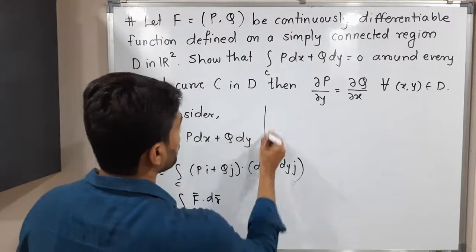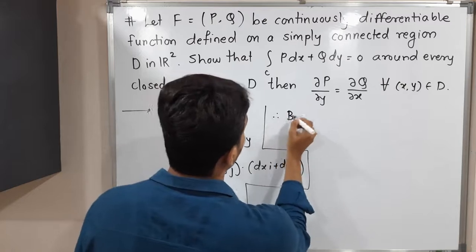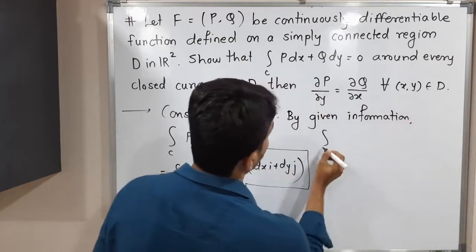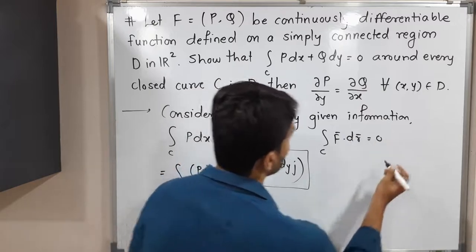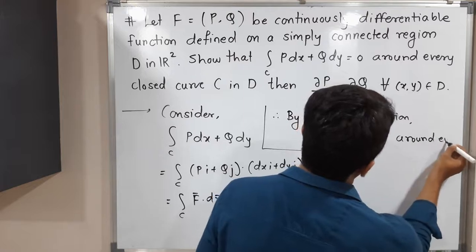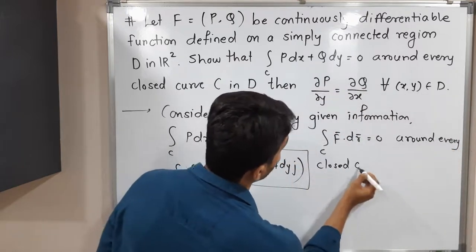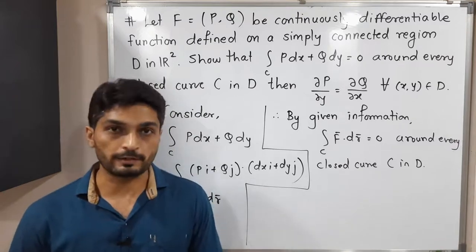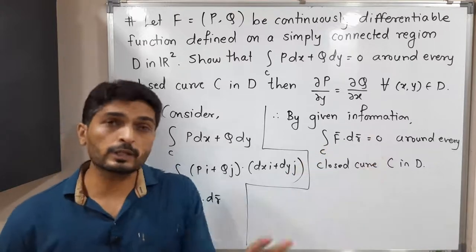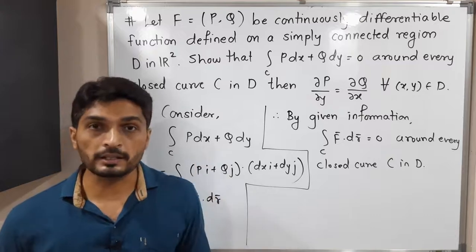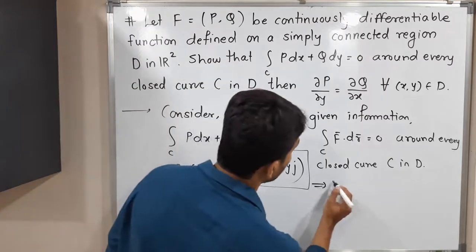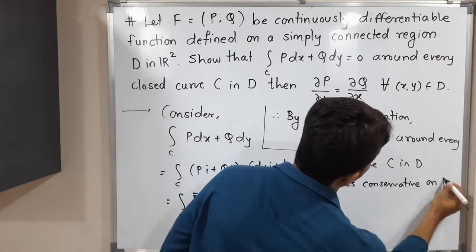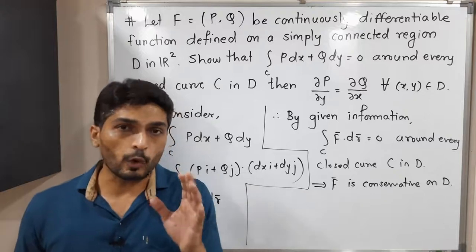By the given information, the line integral of F-bar dot dr-bar over C is 0 for every closed curve C in D. This is the definition of a conservative field. Since the value of the line integral of F-bar dot dr-bar is 0 for every closed curve C in D, we can say our field F-bar is conservative on D.